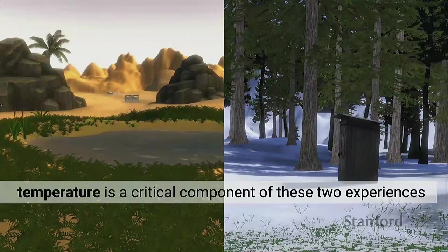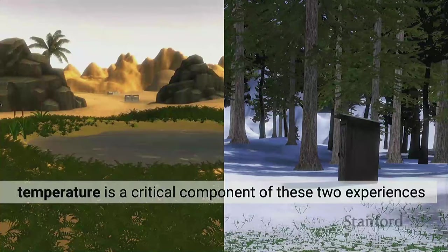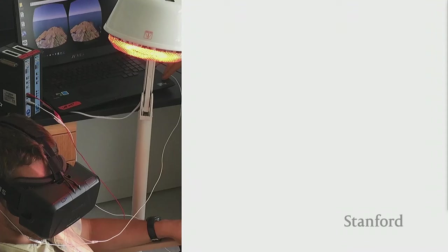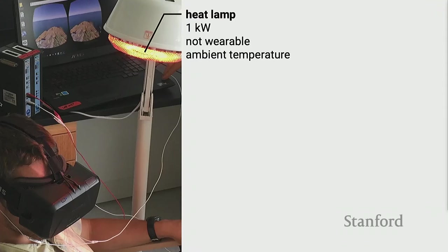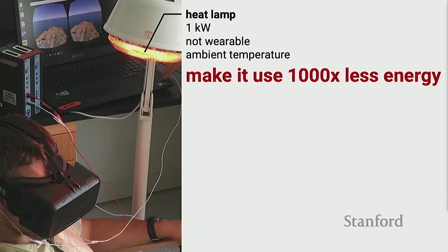Being in a desert or a snowy mountain won't feel real without a temperature component. People in HCI have figured this out — it's really important for training. They use mechanical devices like a heat lamp — about one kilowatt of power, a really heavy device. I'm not clear how VR headsets with already-problematic batteries are going to support generating cooling or heating sensations. So the same question: how do we make this more power-efficient by going to the body?